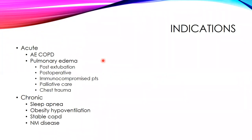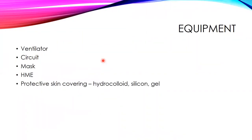Coming to indications for NIV — divided into acute and chronic conditions. In acute conditions, NIV is strongly recommended for acute exacerbation of COPD and pulmonary edema. It may also be used following extubation to prevent respiratory failure, in post-operative conditions where the patient cannot maintain saturation, in immunocompromised patients, palliative care patients, and chest trauma patients. In chronic conditions, NIV is indicated for sleep apnea, obesity hypoventilation, stable COPD, and neuromuscular disease.